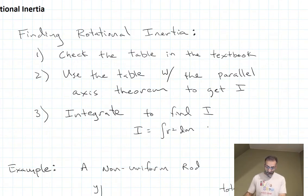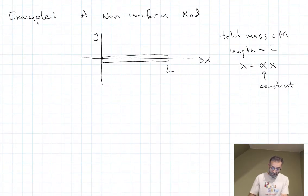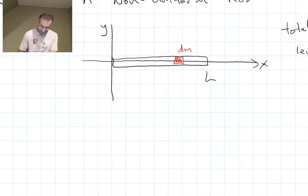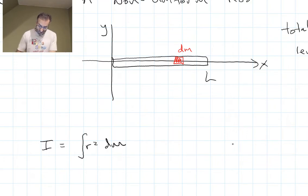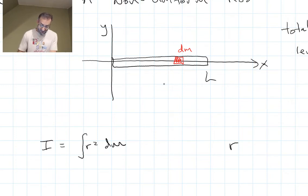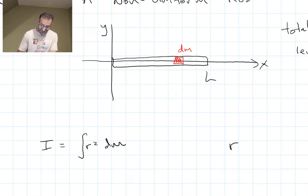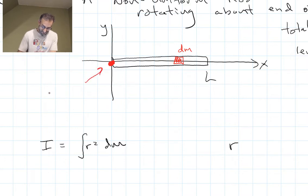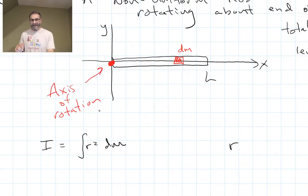Let's take a look at that for this example. We pick some arbitrary location for our dm and say I is the integral of R squared dm. R is the distance from dm to our axis of rotation. If you put your axis of rotation at the origin, then R is just equal to X. Let's make the axis of rotation at the end of the rod, so our axis of rotation is at X equals zero.